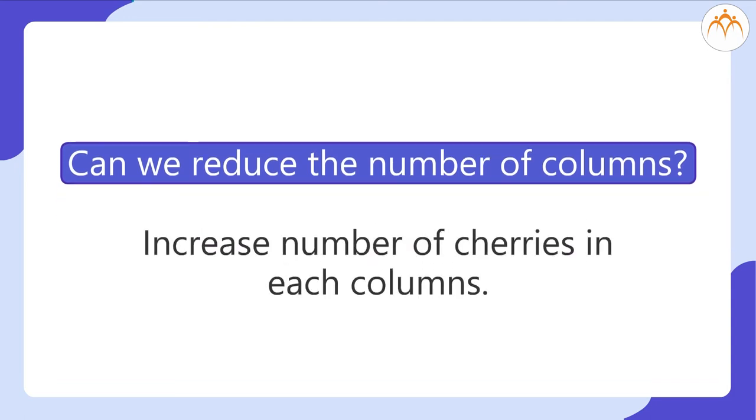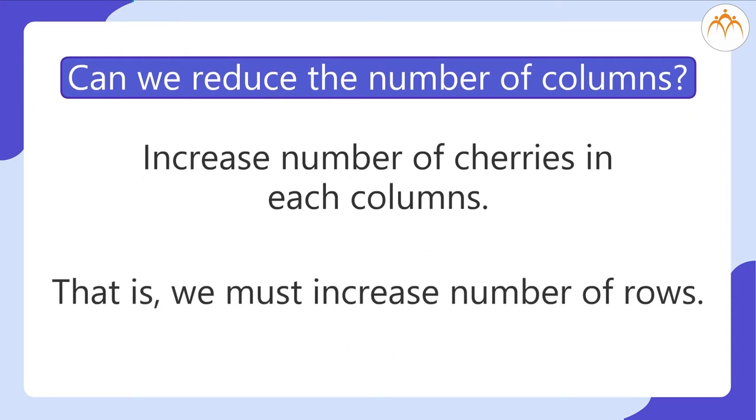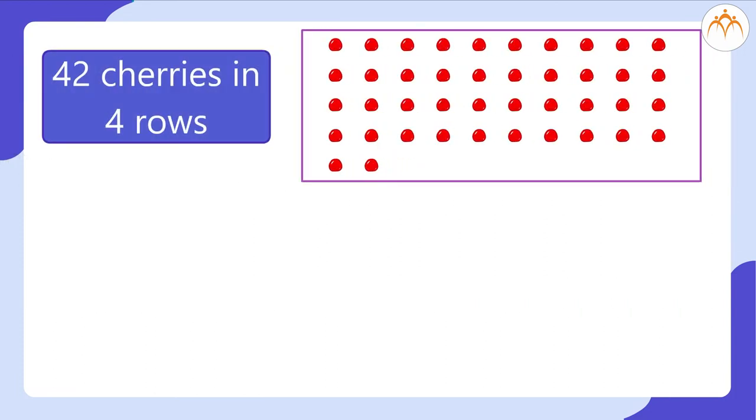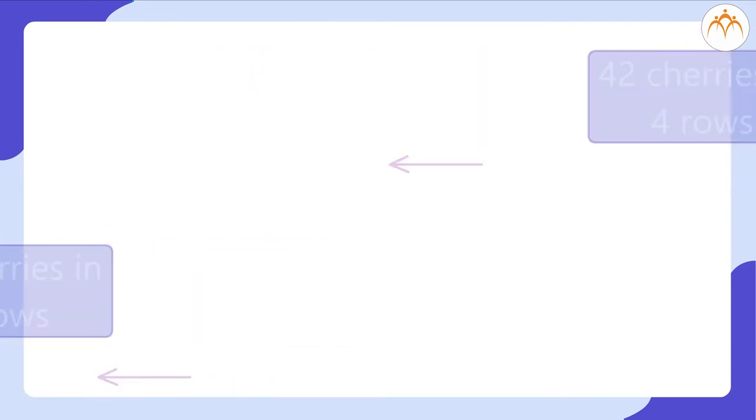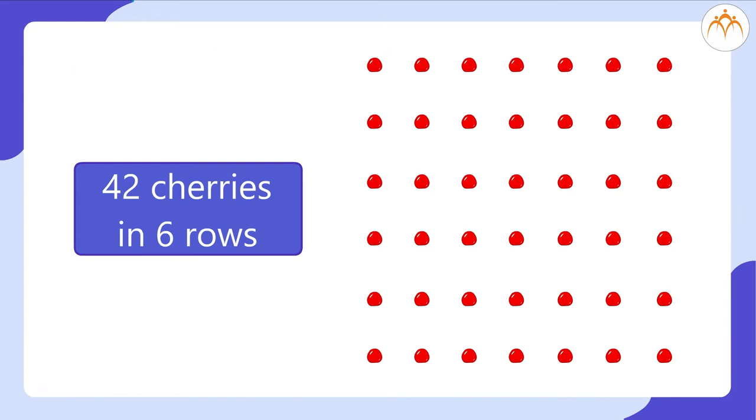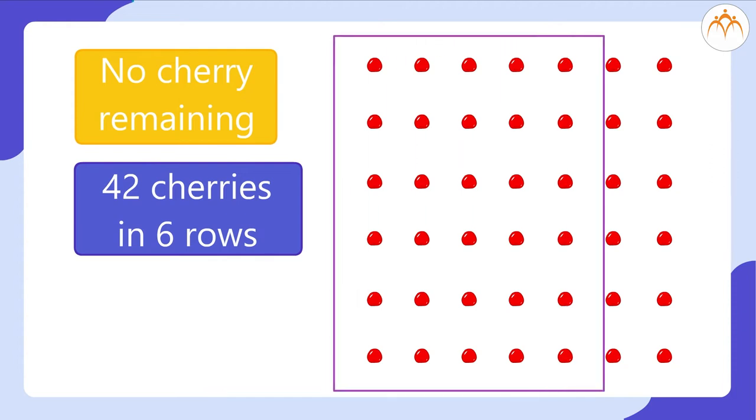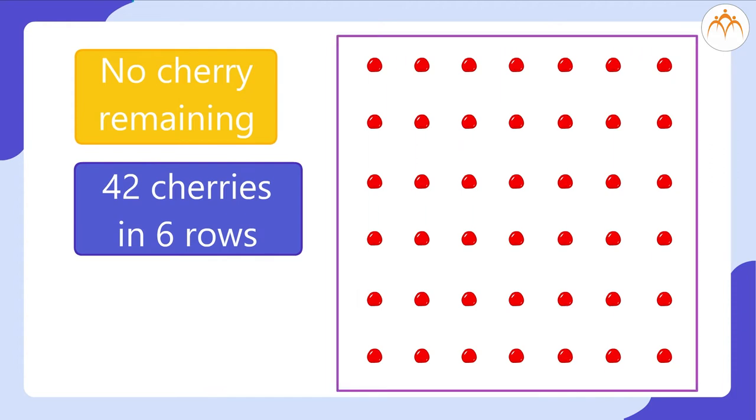For this, we must increase number of cherries in each column. That is, we must increase number of rows. 42 cherries in 4 rows or in 5 rows leave 2 cherries remaining. The arrangement of 42 cherries in 6 rows leaves no cherry remaining. There are 7 columns containing 6 cherries each. Good. The number of columns are reduced.